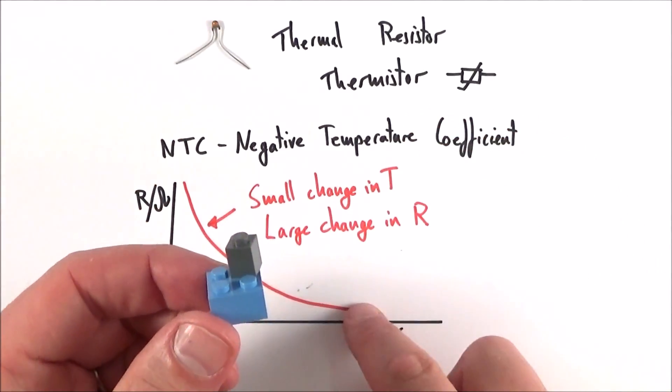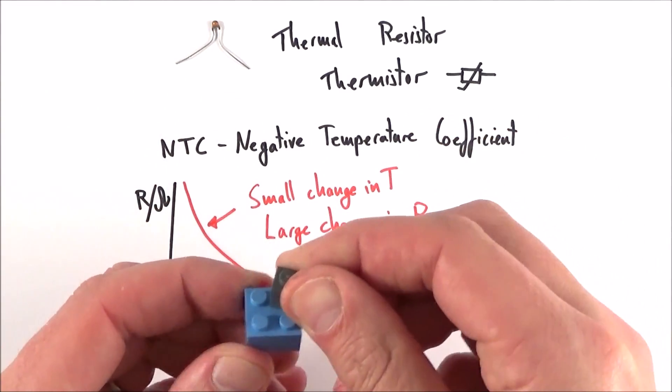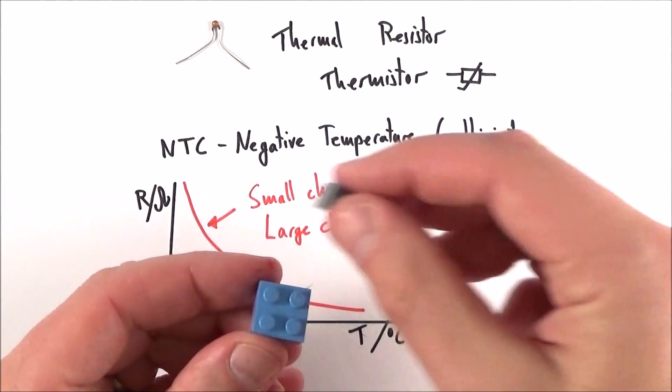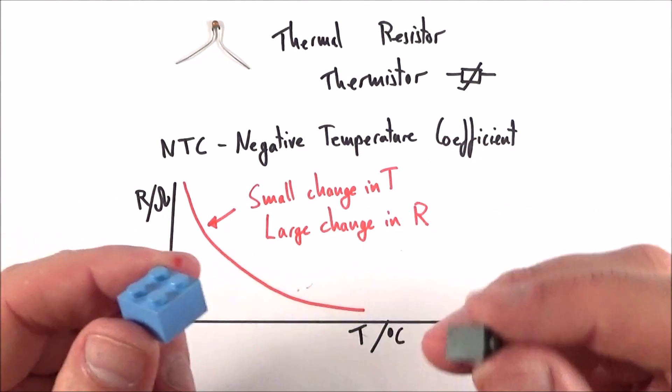When the temperature gets hotter and hotter, there's enough energy for these electrons to escape, and they can then move around and transfer charge around that circuit.